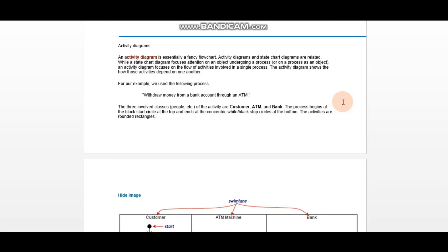Welcome to our YouTube channel. Today the type of diagram we are going to discuss is the activity diagram. An activity diagram is essentially a fancy flowchart — it is a type of flowchart. We are talking about the flow of activities.